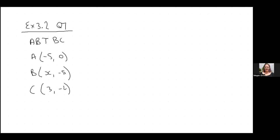So remember we do y2 minus y1 over x2 minus x1. So if I have AB, I'm going to say y2 minus y1 over x2 minus x1. So it's minus negative 5, so it's plus, which gives me negative 5 over x plus 5.